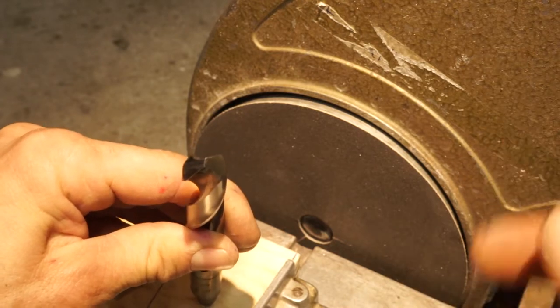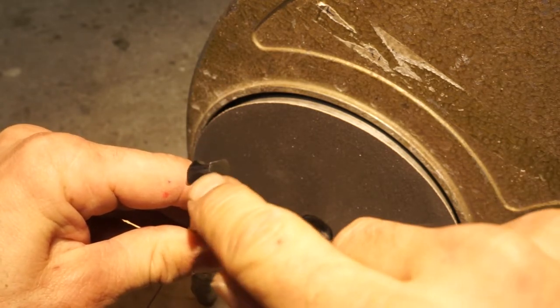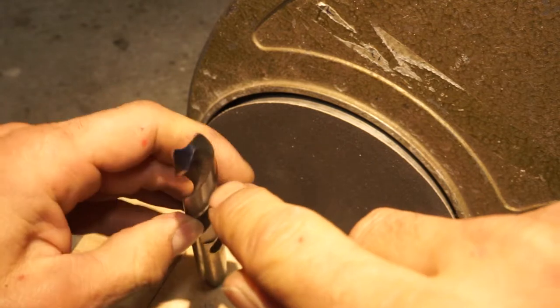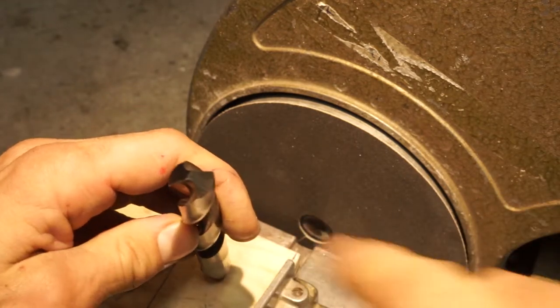After you've done this, you can use visual inspection or a gauge to watch that both cutting faces have the same size and are center aligned.